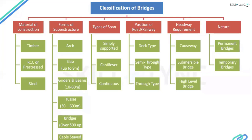There are many classifications. Based on material: as you have already seen in the pictures, we go for timber, RCC (reinforced cement concrete) for small-span bridges, pre-stressed concrete for long-span bridges, and steel for spans beyond where pre-stressing would be more costly. There are also different forms of superstructure.